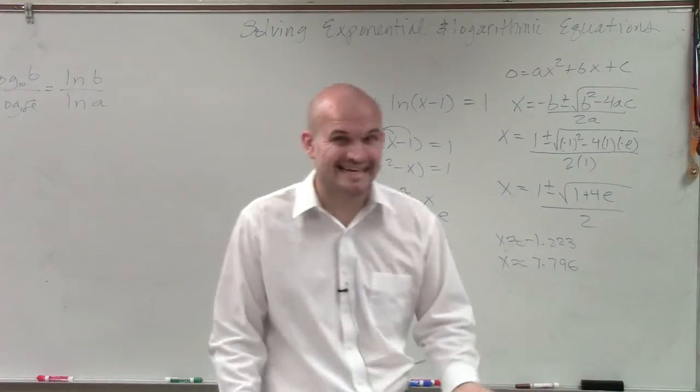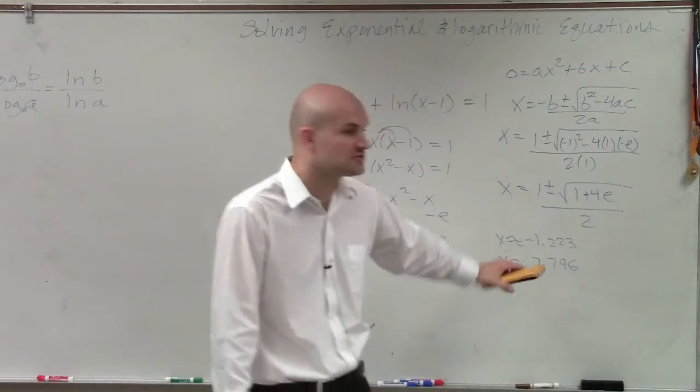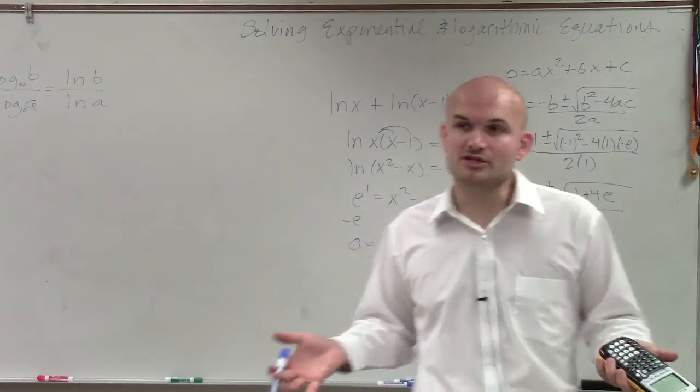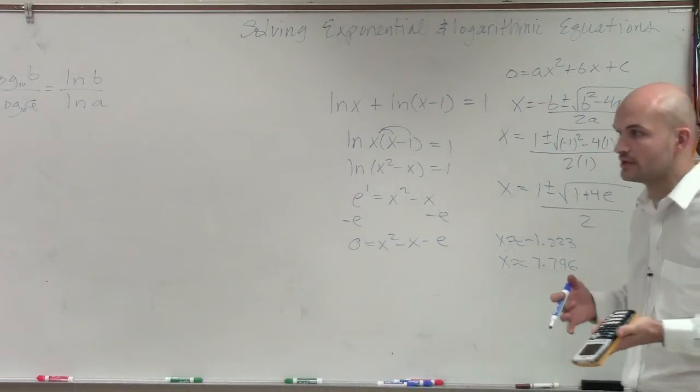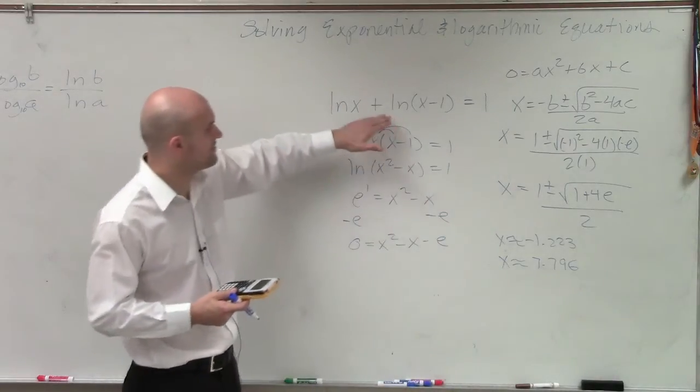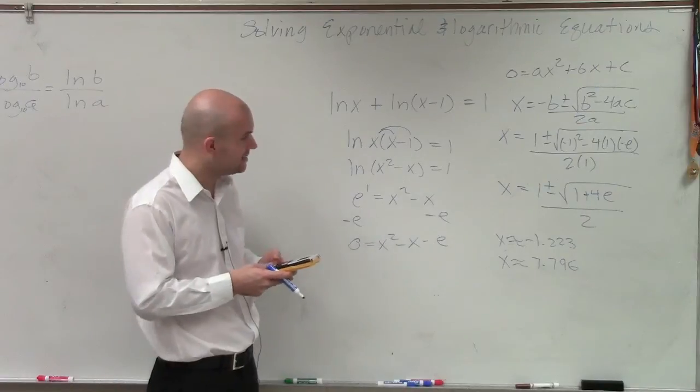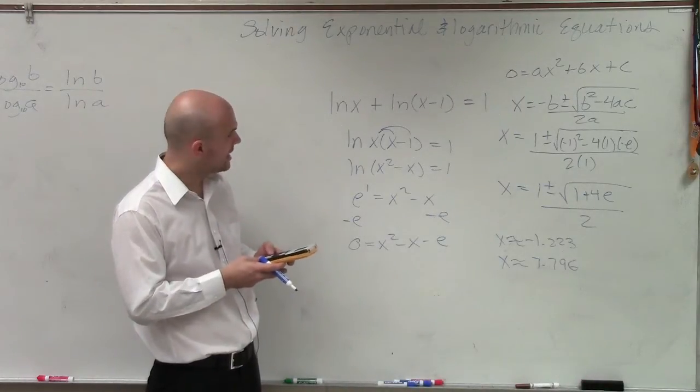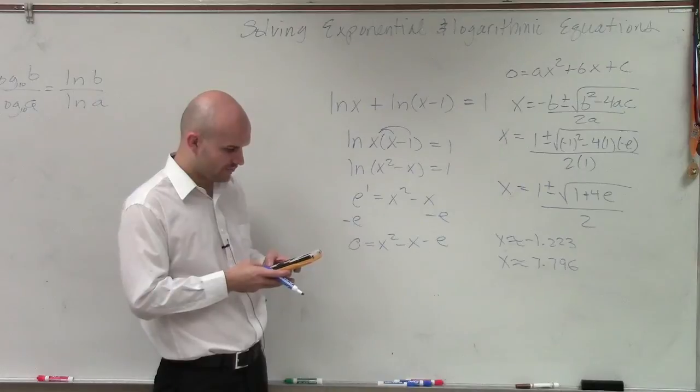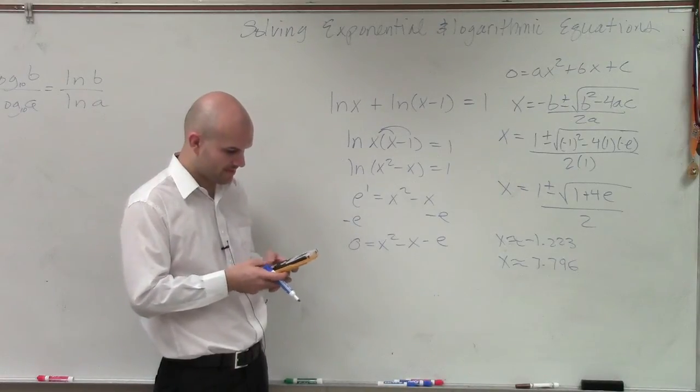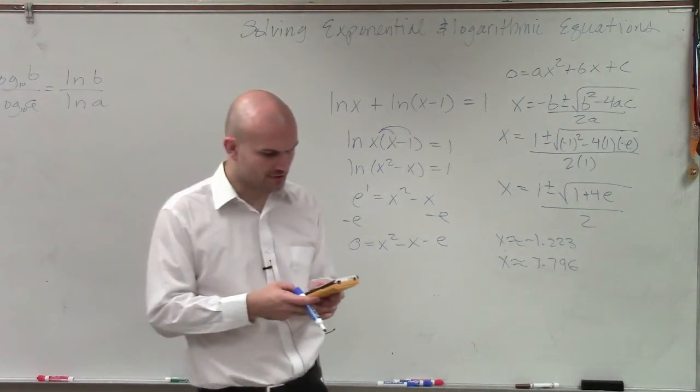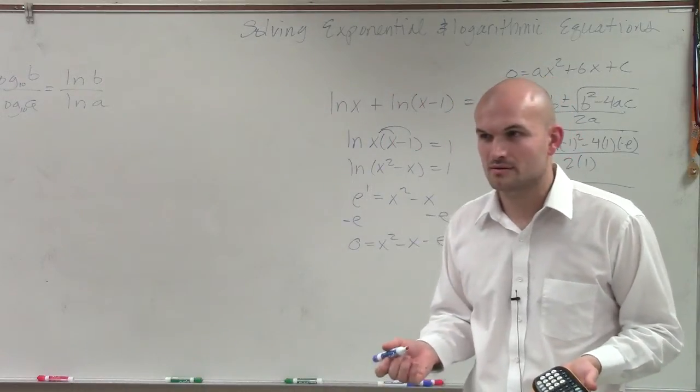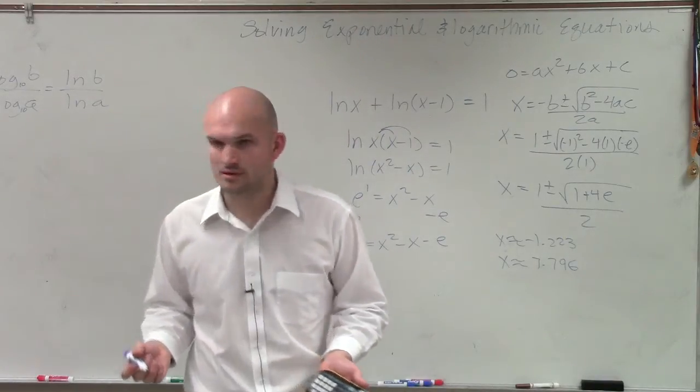Now, remember, we're approximating e. e is an irrational number. So you're not going to have an exact number. That's why I'm writing this approximation. However, there's one last thing. We have two values, a positive and a negative. So we want to make sure that both of these are going to work, that we're not going to have any extraneous solution. So what we can do is plug in these values back into here. So if I had ln of negative 1.223 plus ln of negative 1.223 minus 1. And what you see is there's no real answers. Because can you take the ln of a negative number?